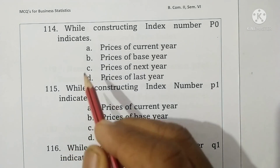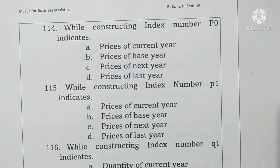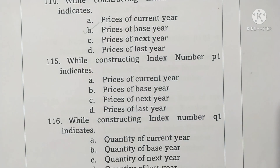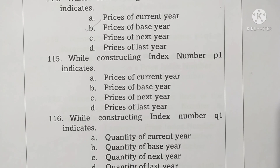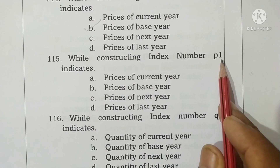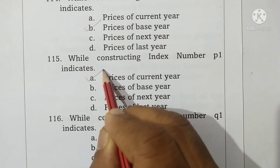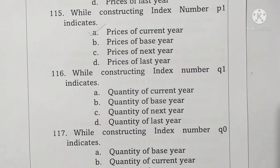Question 115: while constructing an index number, p1 indicates price 1, i.e., the price of the current year. Option A is correct. Question 116: while constructing an index number, q1 indicates quantity 1, i.e., the quantity of the current year. Option A is correct.